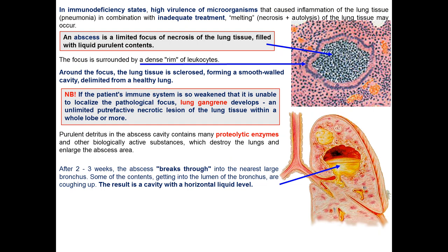After two to three weeks, the abscess breaks through or ruptures into the nearest large bronchus. Some of the content enters the lumen of the bronchus and is coughed up. The result is a cavity with a horizontal liquid level. Abscesses can be single or multiple.